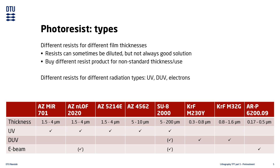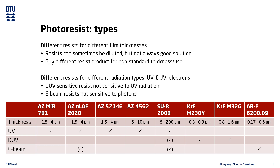Photoresists also differ in the type of radiation they are sensitive to. The standard resists at DTU Nanolab can be grouped by UV-sensitive resists, deep-UV-sensitive resists, and electron beam resists. The deep-UV and electron beam resists are only sensitive to their own regime, but some of the UV resists can be sensitive to both deep-UV and electrons.